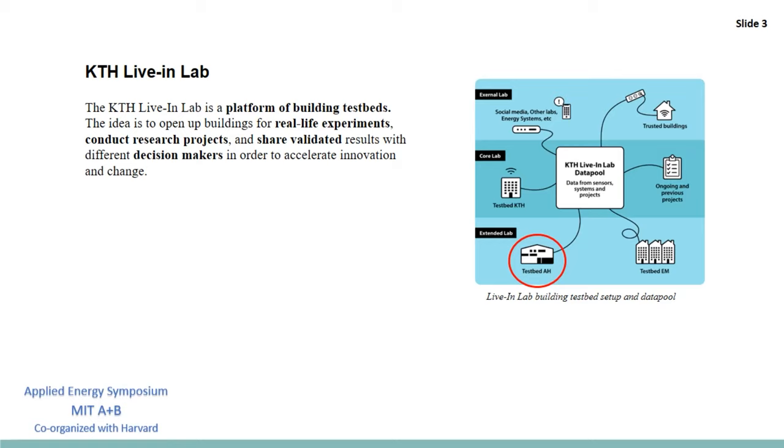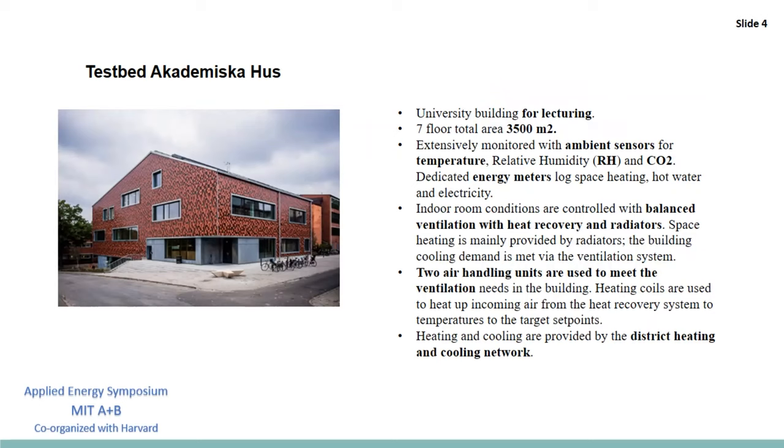The testbed object of this presentation is Testbed AH which stands for Akademiska Hus. This is part of the so-called extended testbeds which includes buildings typically equipped with modern but standard equipment. Testbed Akademiska Hus is a university building for lecturing with seven floors and an area of 3500 square meters. It has an extensive monitoring system to monitor temperature, relative humidity and CO2 concentration and dedicated energy meters for energy monitoring. Indoor conditions are controlled with balanced ventilation with heat recovery and radiators. The ventilation is supplied by two air handling units equipped with heating and cooling coils. Heating and cooling are supplied by the district heating networks.